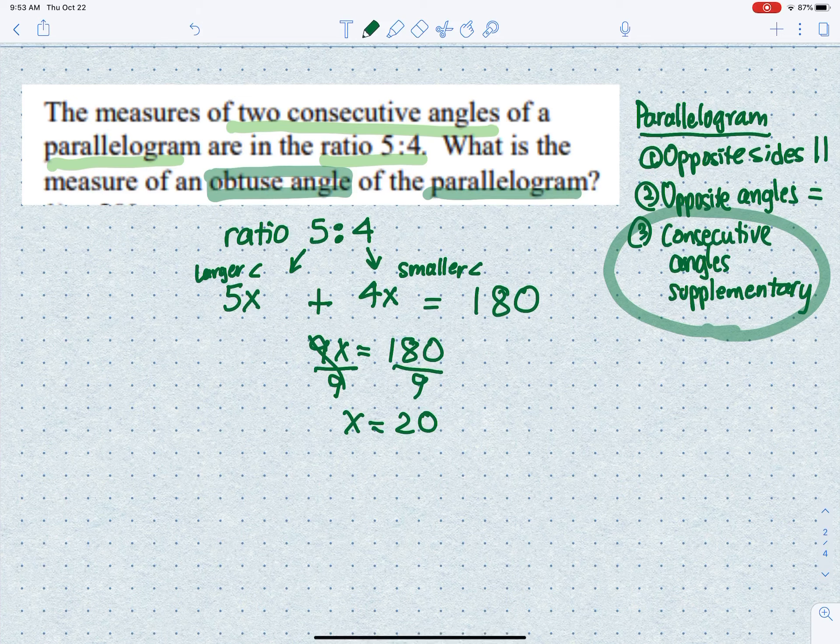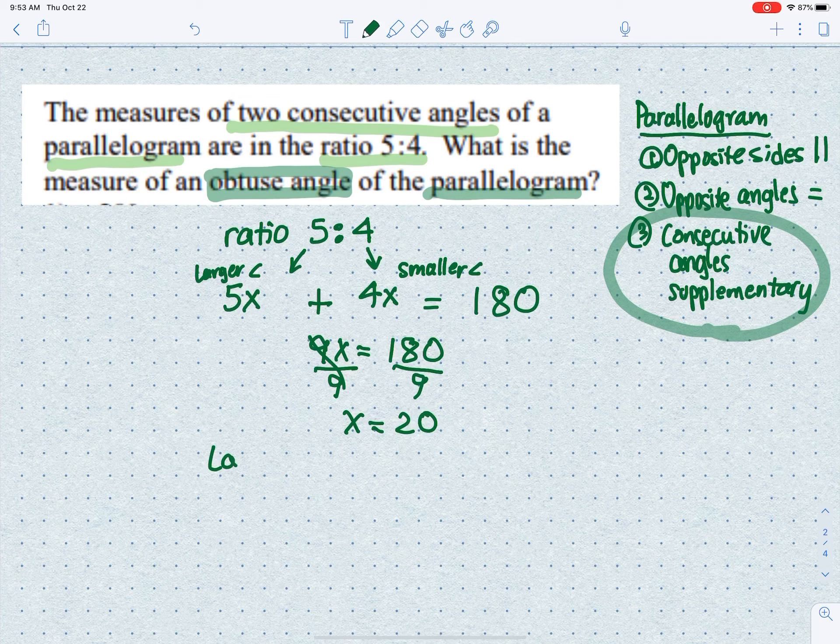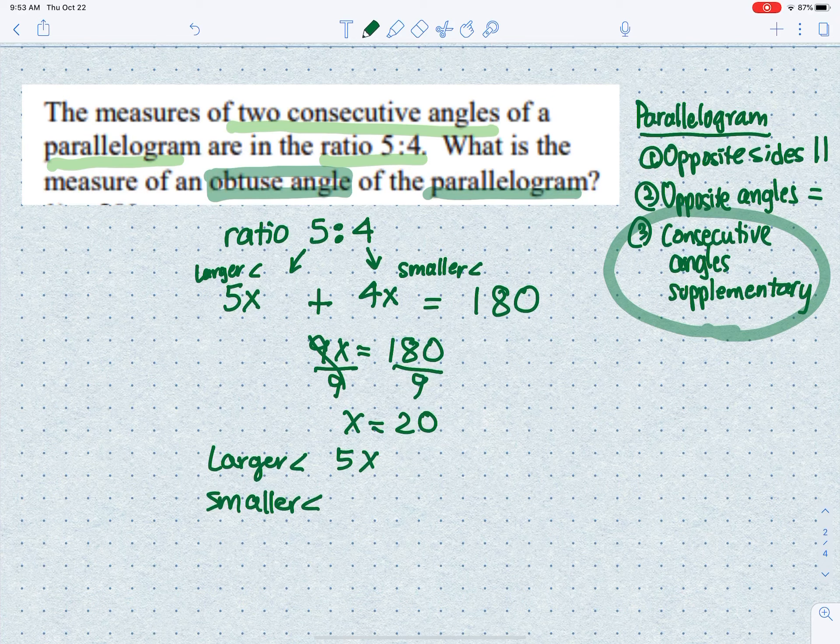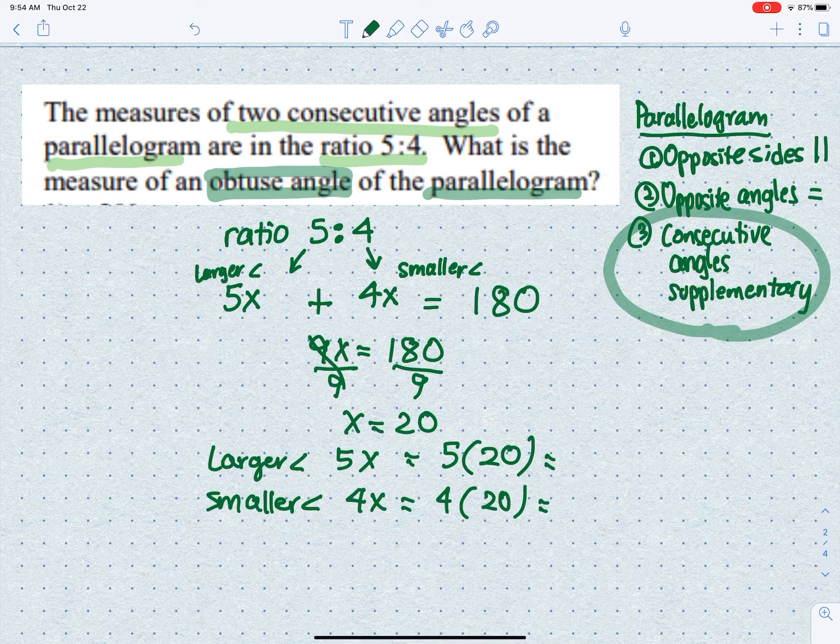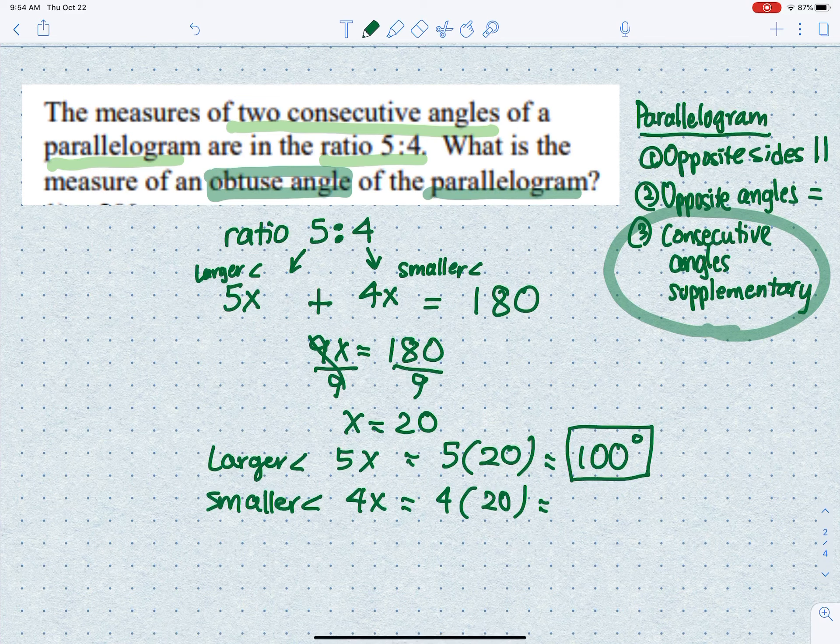Now we want to find both angles. The larger angle is represented by 5x and the smaller angle by 4x, so let's plug in our value. Anytime we see x, we plug in 20. So 5 times 20 is 100—the larger angle is 100 degrees. The smaller angle is 4 times 20, which is 80 degrees.